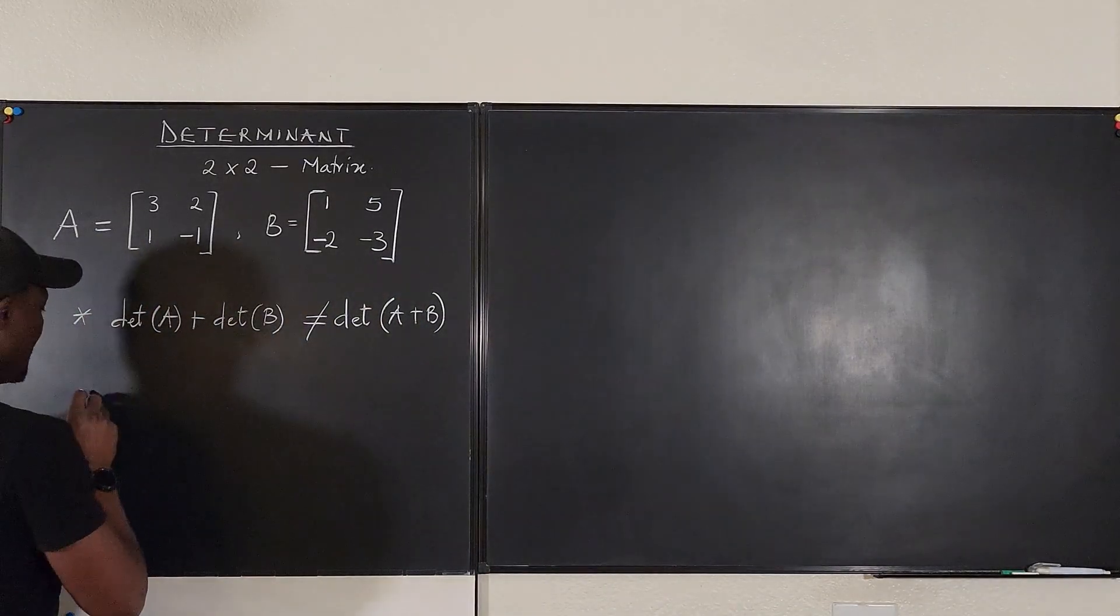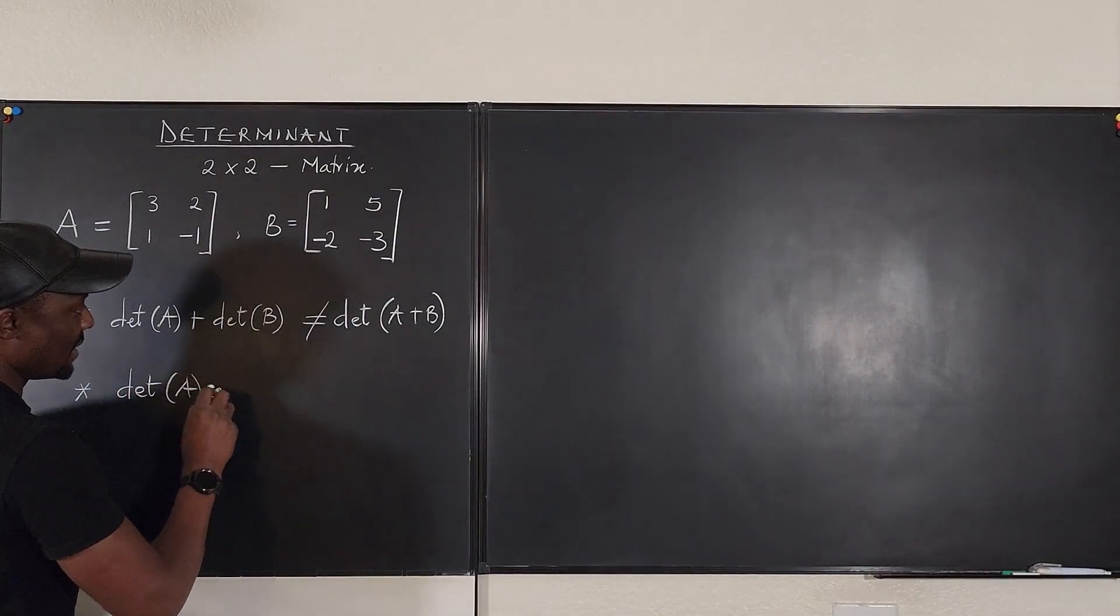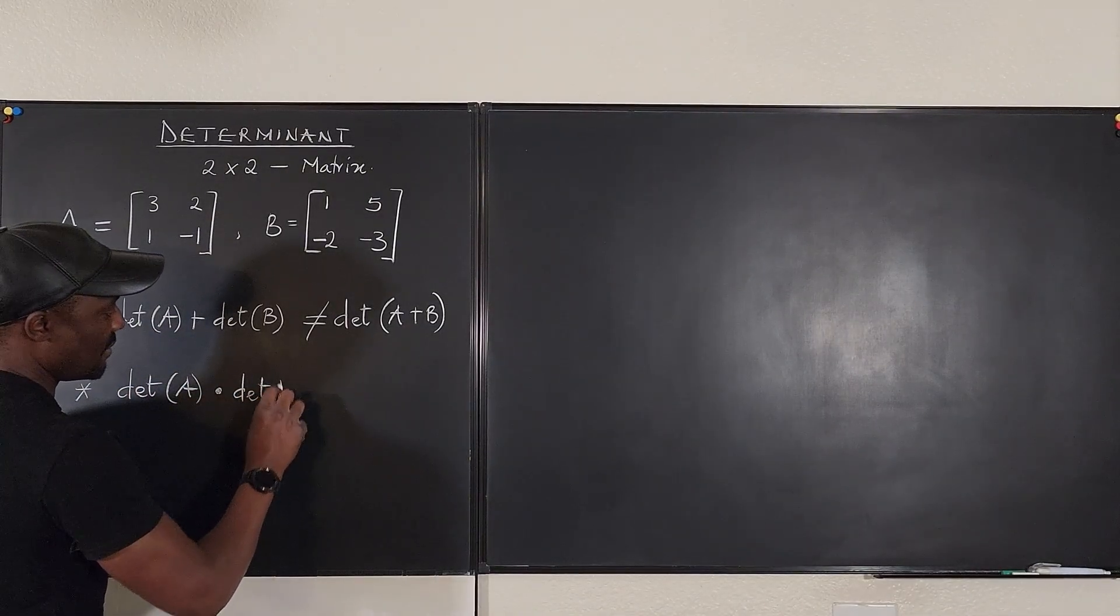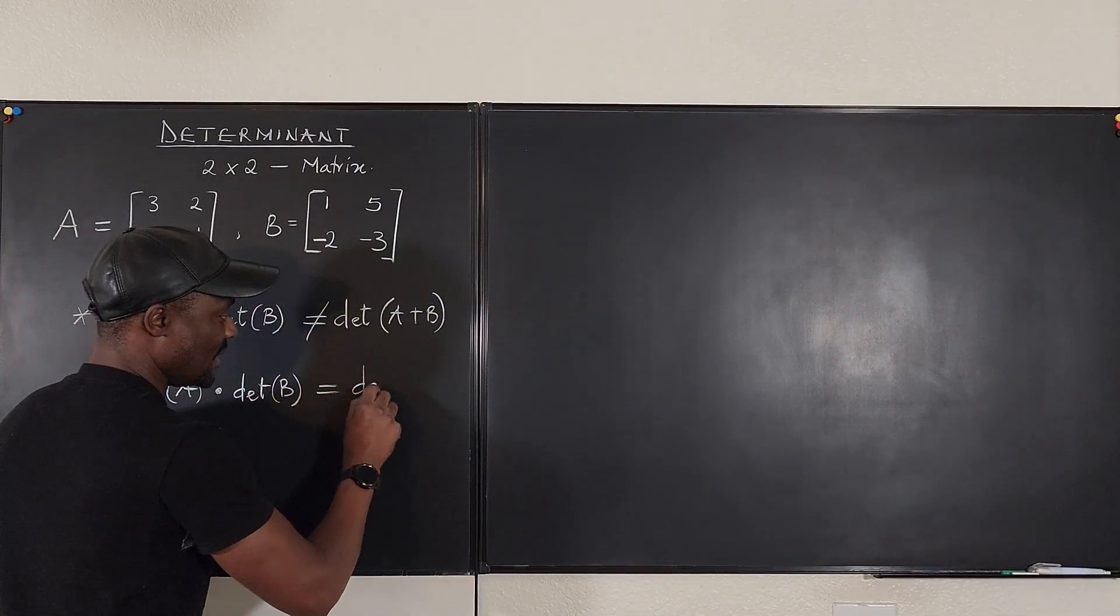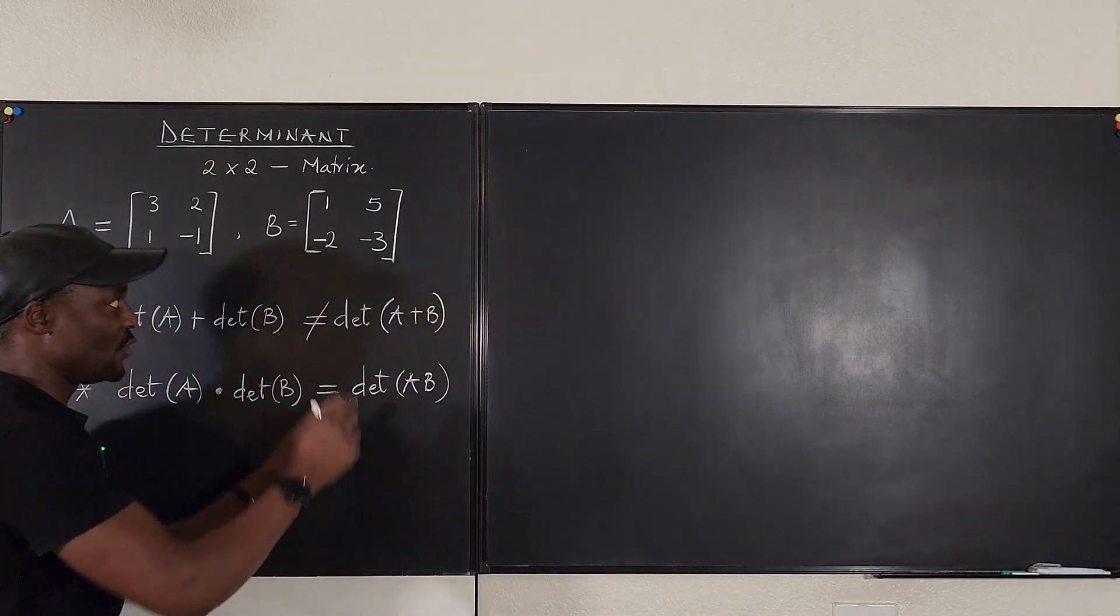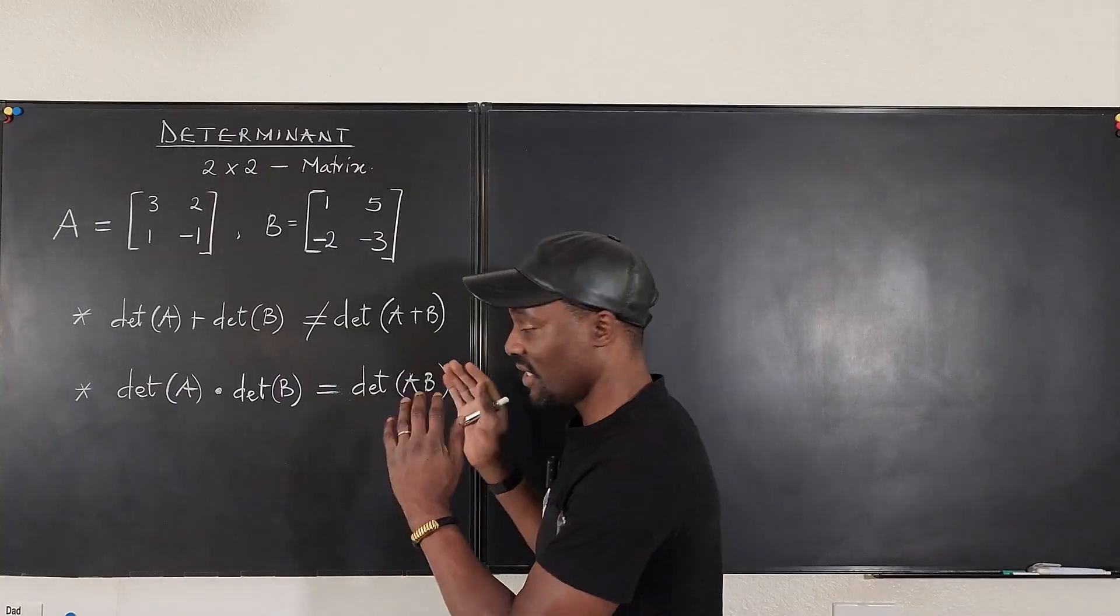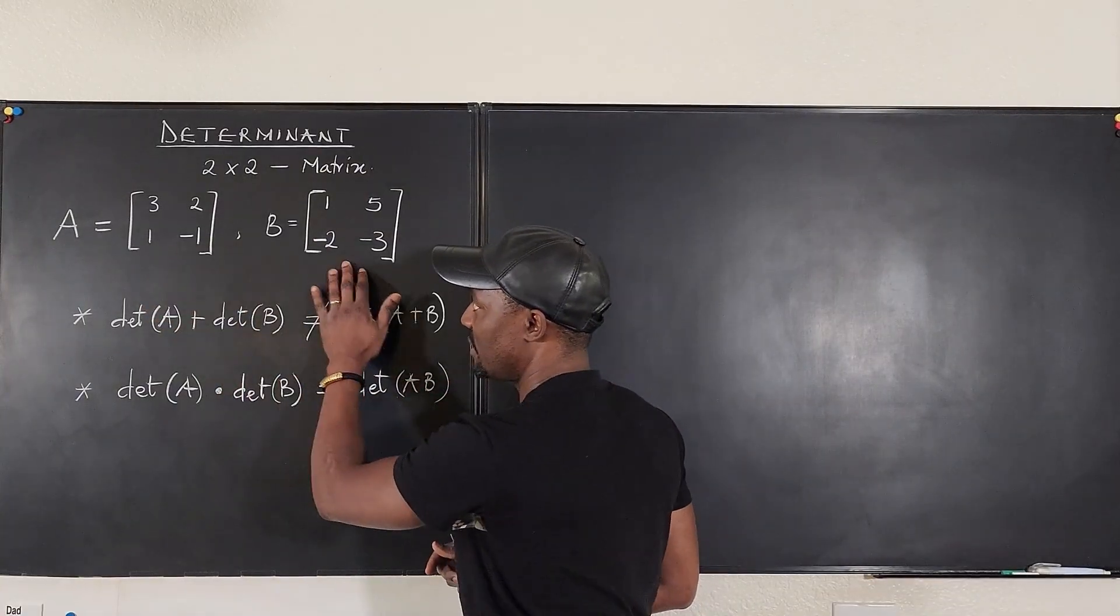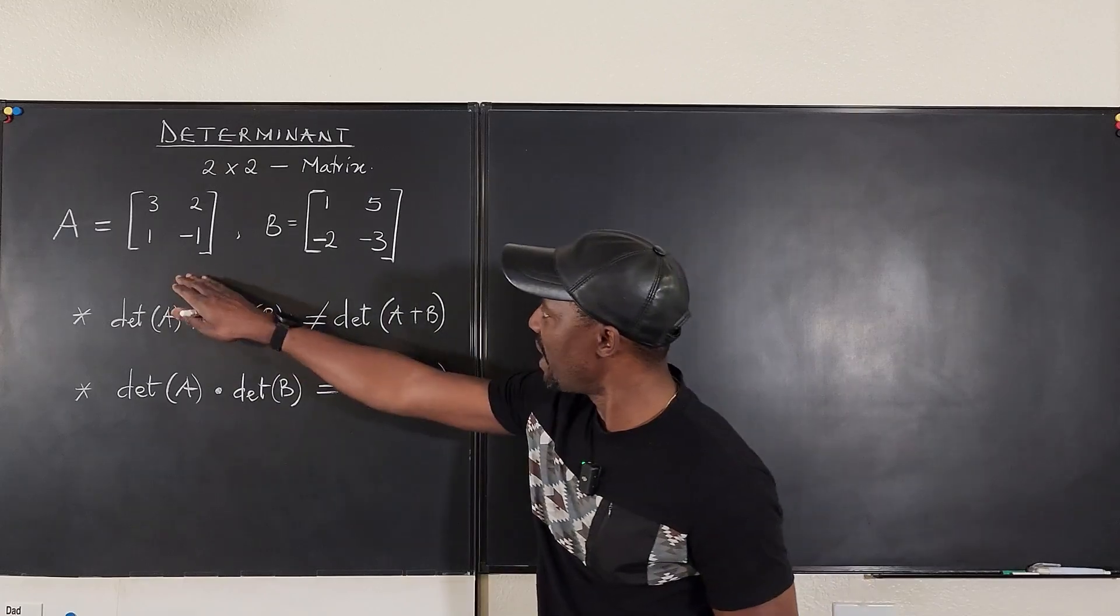So that's one thing you want to note. Then the second one is that the determinant of A, if you multiply it by the determinant of B, it's going to be equal to the determinant of the product. So let's say you multiply these two together and you eventually take the determinant. It's the same thing as you're getting the determinant separately and then multiplying them. And I'm going to focus on just two by two matrices.